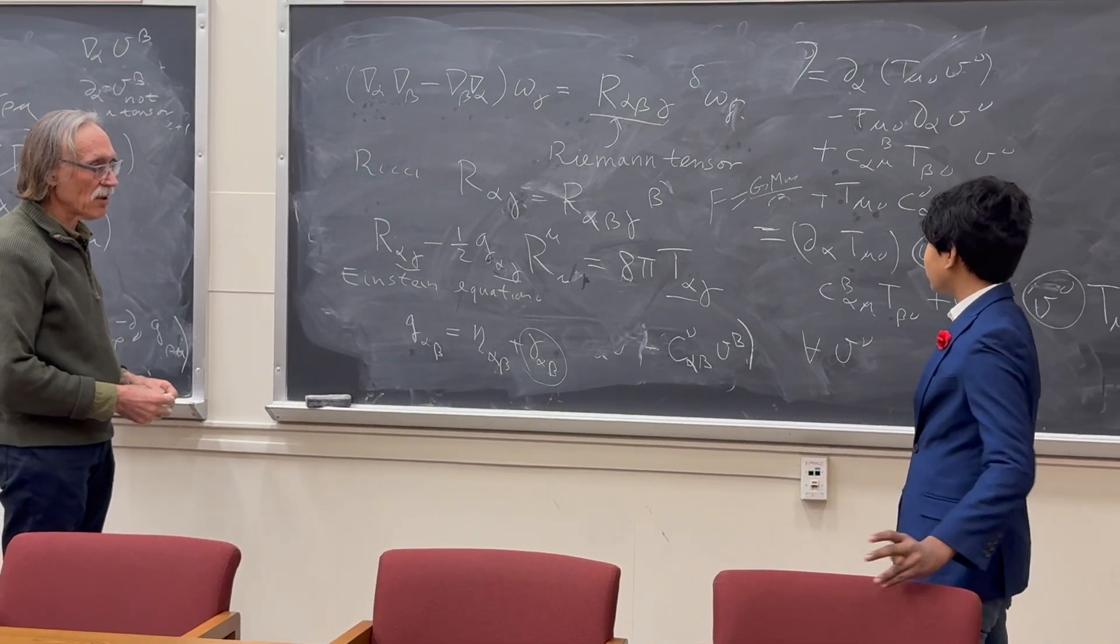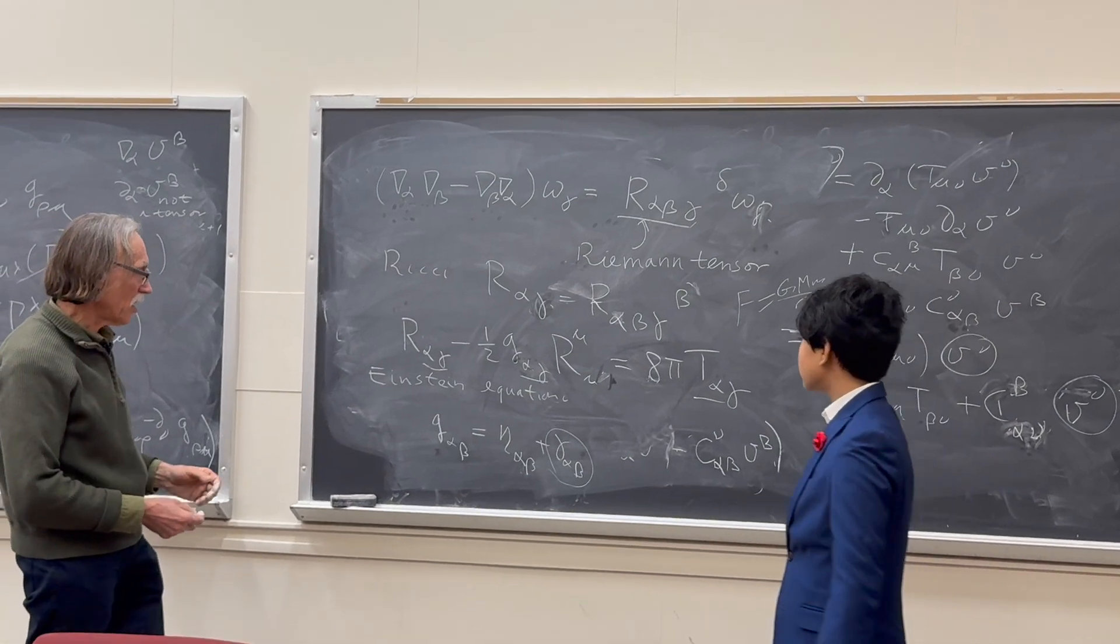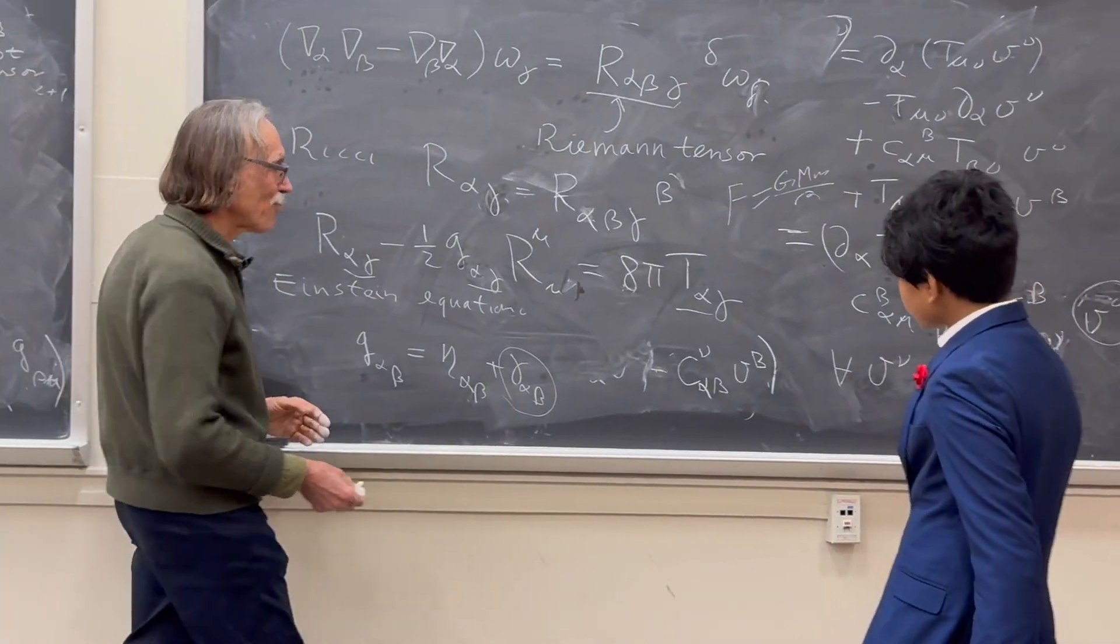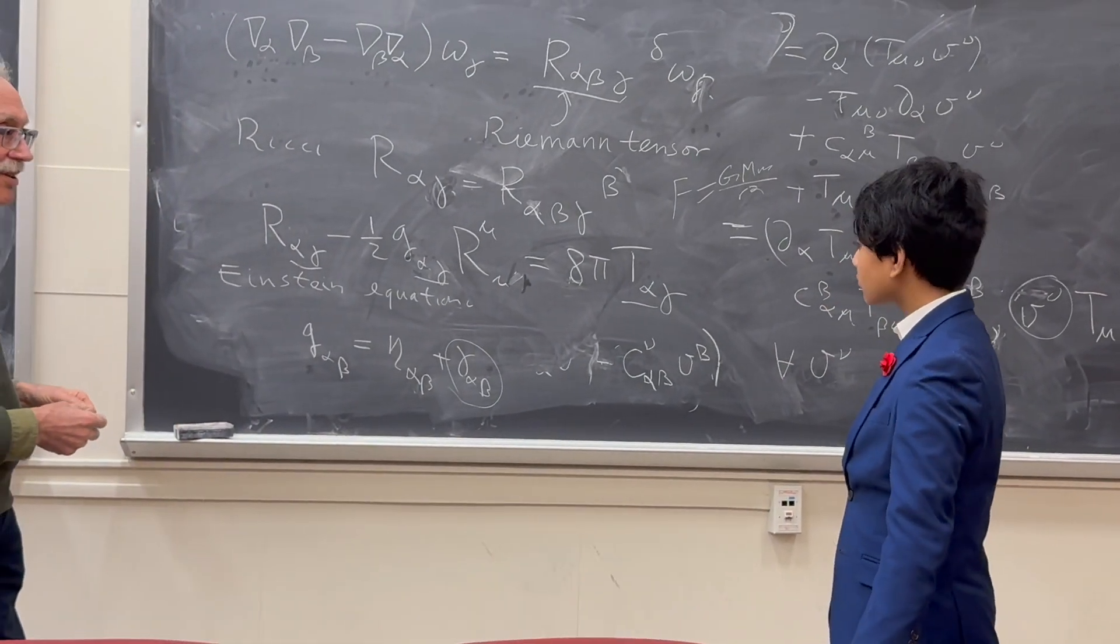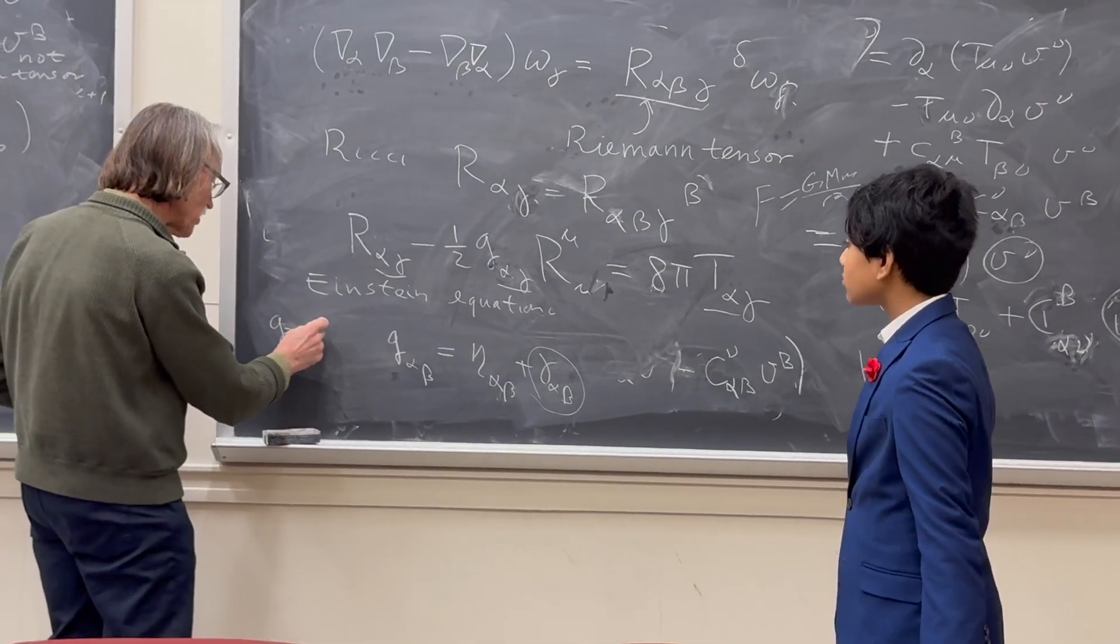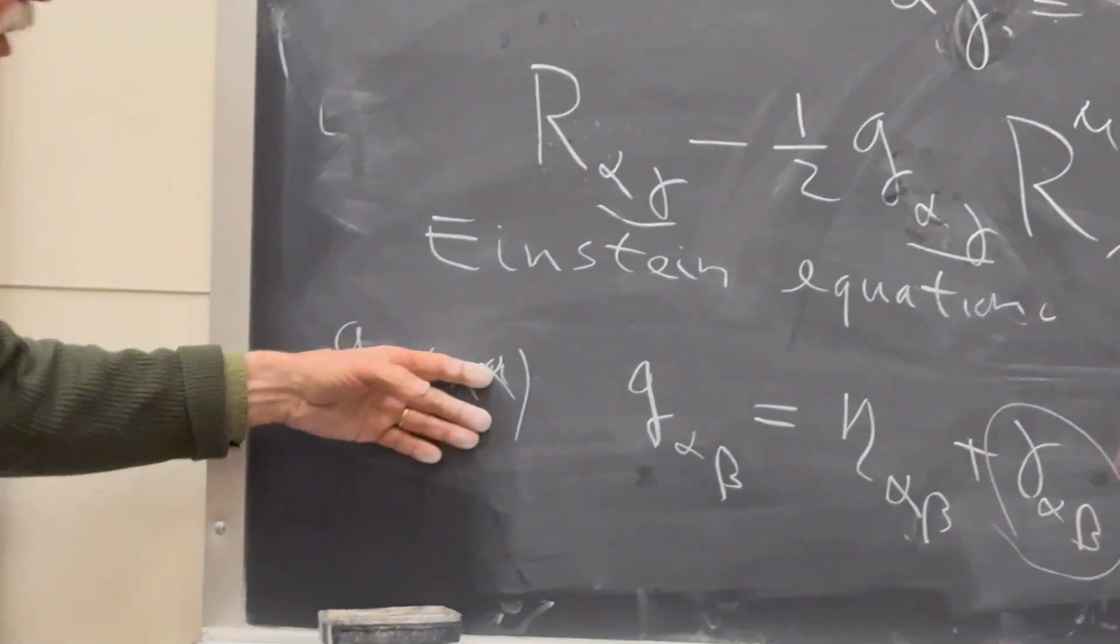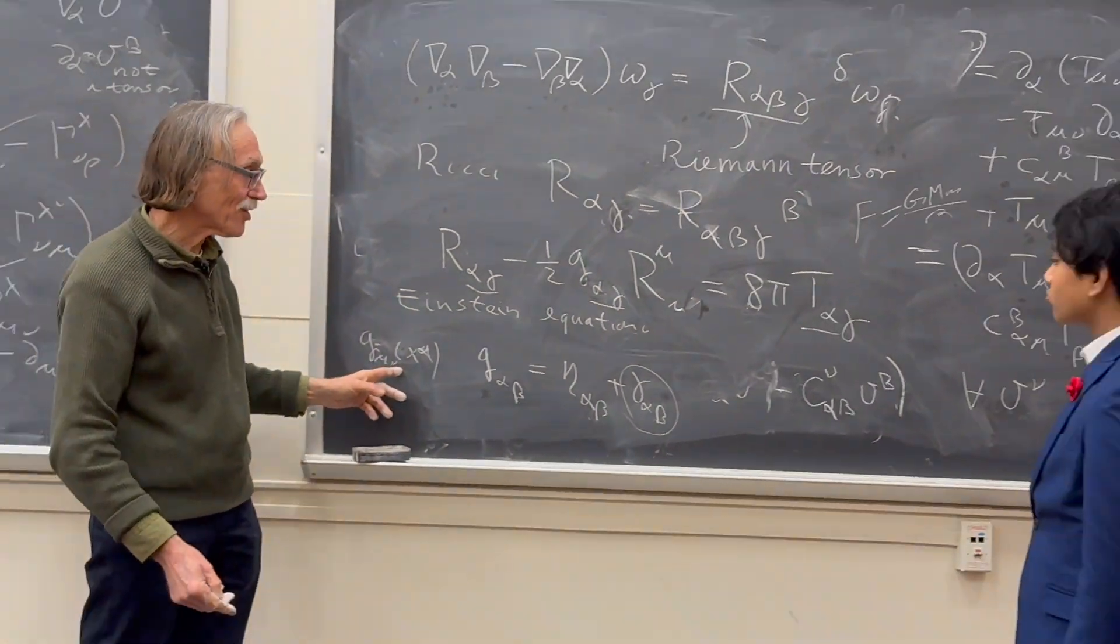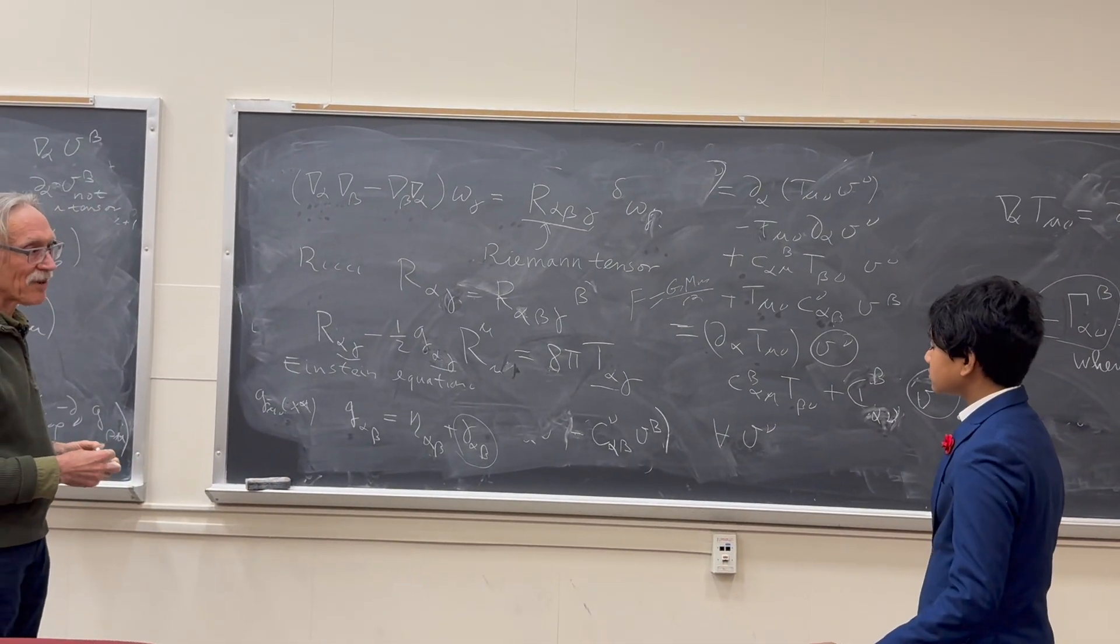So now we've really started treating the metric tensor as variable? That's right. It's really a solution of this equation. Given some matter distribution, you can solve this equation for the metric tensor. So the metric tensor g_μν is a function of space-time. So that is the unknown function. And this is a differential equation for this unknown function, given some matter distribution, which is inside the energy-momentum tensor.